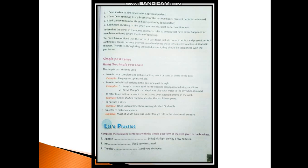Thirdly, to refer to an action or event that occurred over a period of time in the past — for example, a few months or a few years. Like: 'Shaqeel studied mathematics for the last 15 years.' Fourthly, to narrate a story — for example: 'Once upon a time there was a girl called Cinderella.' And lastly, to refer to historical events — for example: 'Most of South Asia was under foreign rule in the 19th century.'